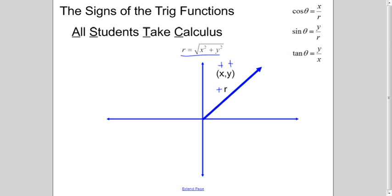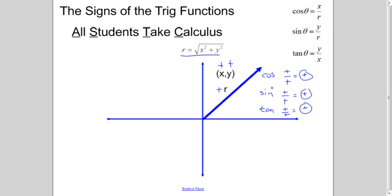So let's take a look at what we have. For the cosine rule, it's x over r, so it would be positive over positive, which equals a positive. Sine is equal to y over r, which is positive over positive, and the value of sine for any angle in the first quadrant would also be positive. And then tangent, which is y over x — y is positive and x is positive, so positive over positive is positive.